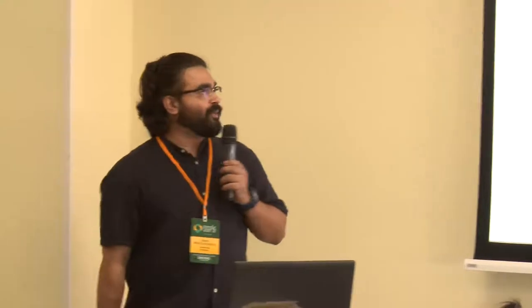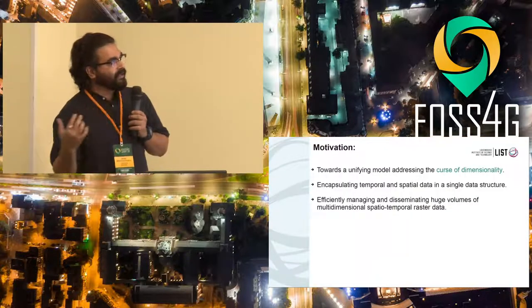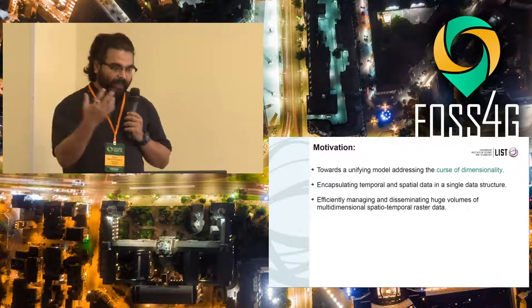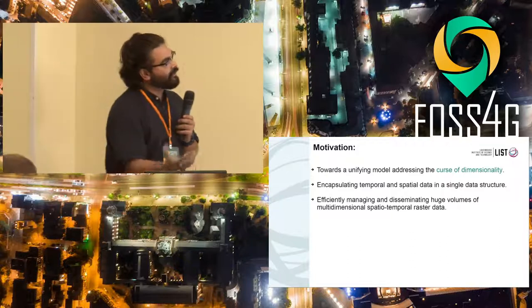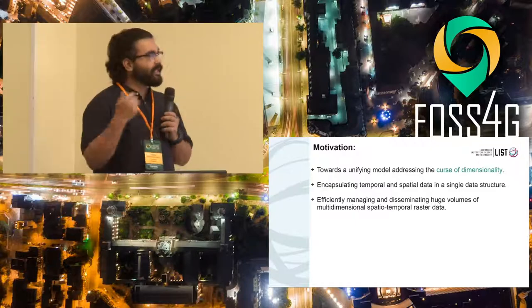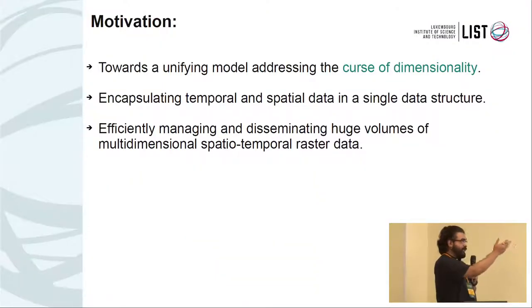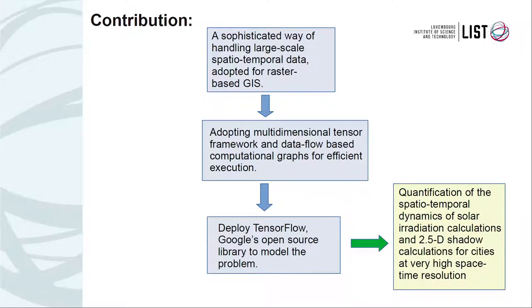These are our research questions. We are trying to tackle the curse of dimensionality issues in earth observation data. Curse of dimensionality means when you have a huge amount of data with different dimensions, it creates scalability problems in computation. We are also trying to find a single data structure where you can keep spatial and temporal information together, with the main concern being time and scalability. To address these questions, we proposed a sophisticated way of handling large-scale spatiotemporal data in raster-based GIS.